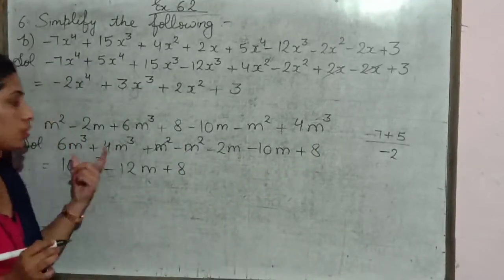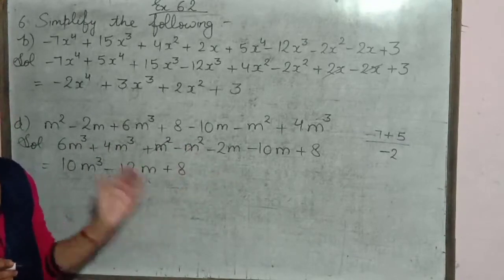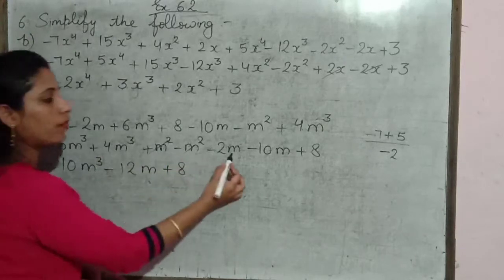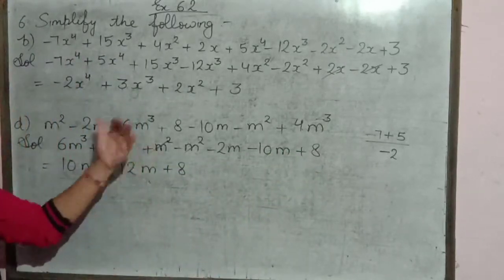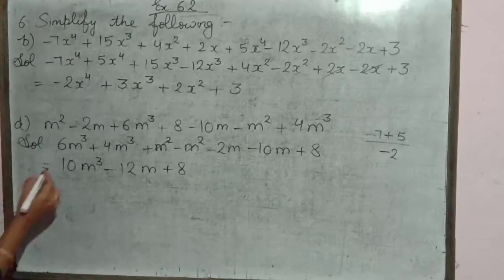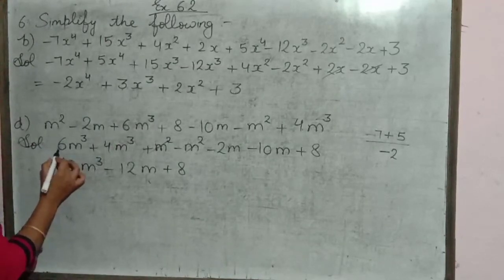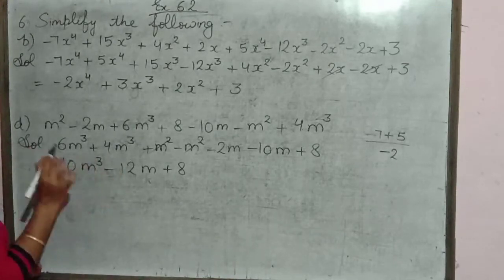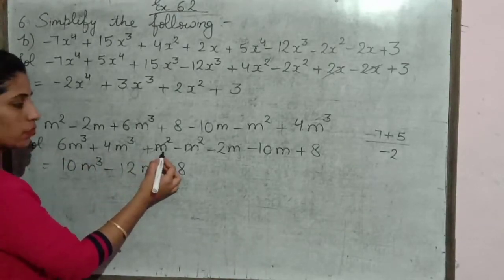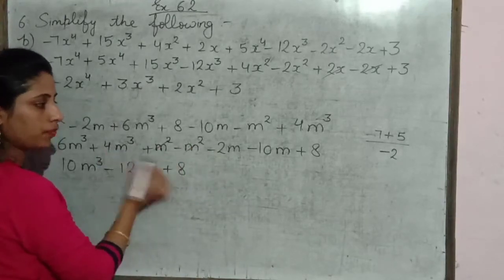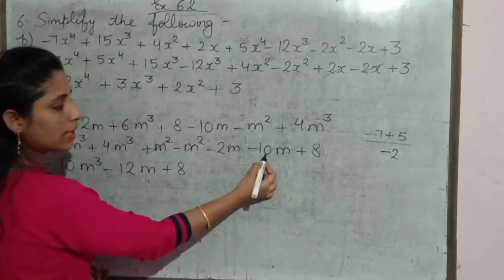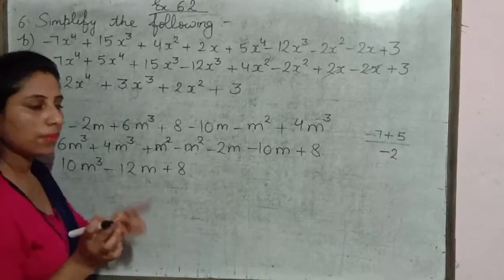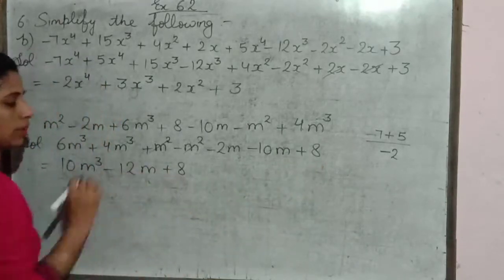7 terms hain. Jab aapne like terms ko arrange kar diya hai ek saath, uske baad bhi aap in terms ko count karenge — because terms wohi rehti hain. Ab hum inhe ek saath solve karenge. Yahan dono hi positive hain, 6 and 4, so 10m cube. Plus m square minus m square cancel ho jaenge. Then minus 2 and minus 10, so here minus 12m. And last, plus 8.